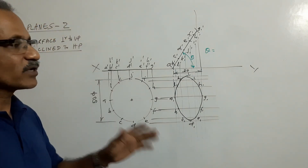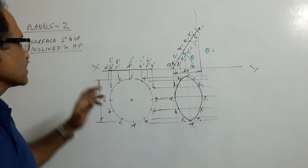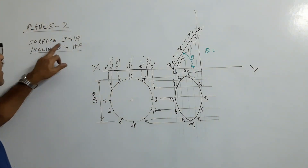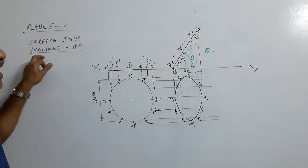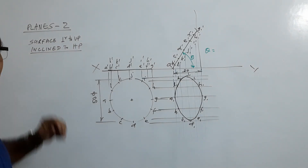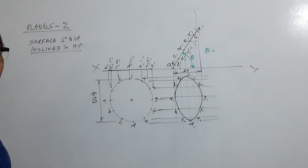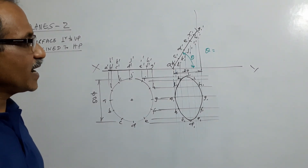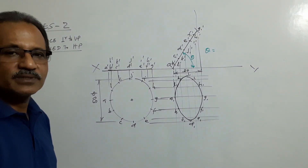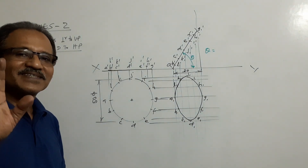Now you are asked to find out this angle. So we have completed a class where the surface is perpendicular to VP and inclined to HP. Surface perpendicular to VP and inclined to HP. Thank you.